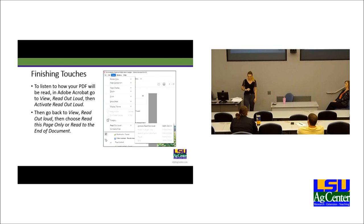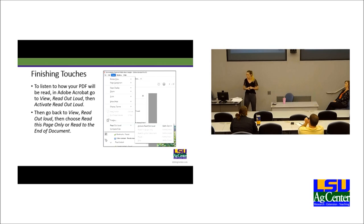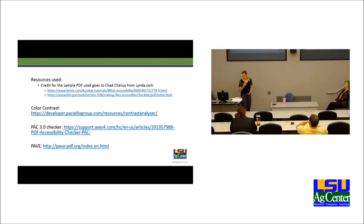As Liz mentioned, to listen to how your PDF will be read in Adobe Acrobat, go to View > Read Out Loud > Activate Read Out Loud, then go back to View > Read Out Loud and choose Read This Page Only or Read to the End of the Document. Once every item has passed, your PDF should be ADA compliant. If anybody has any questions, they can ask through your microphone or through the chat. If we don't know the answer, we'll make a note and research it and email you the answers.